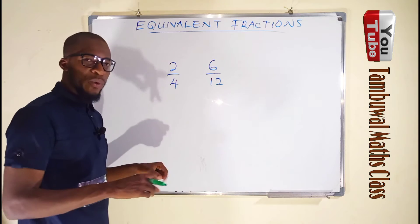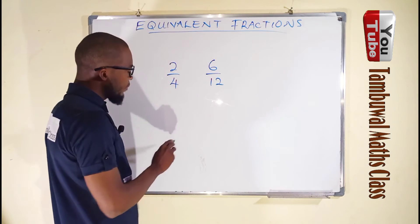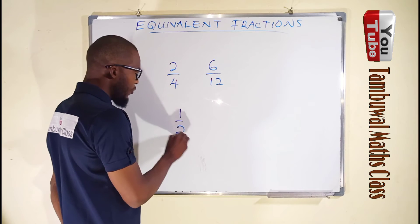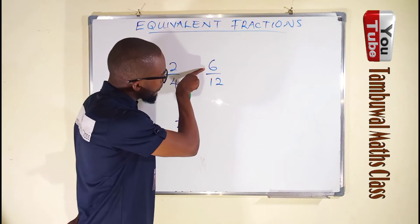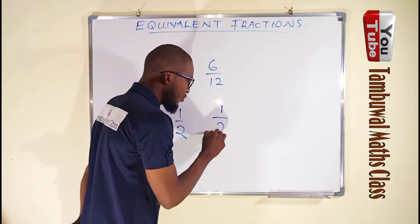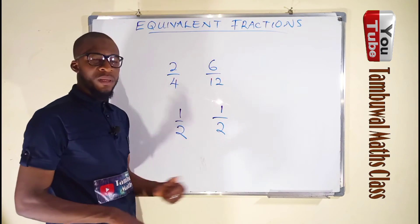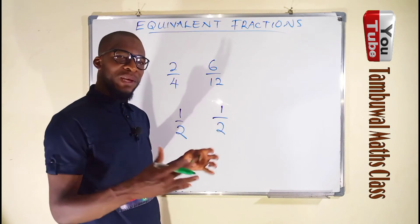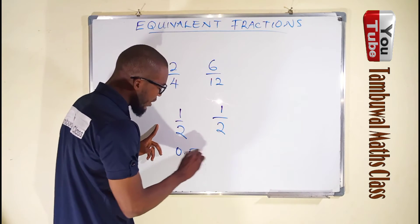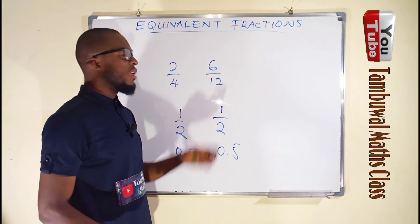Number two: if we reduce these fractions to their lowest term they will be exactly the same. Two can go into two one time; two can go into four two times. Six can go into six one time; six can go into twelve two times. To their lowest term they are exactly the same. And last but not least, if you transform them to decimal numbers they will also be exactly the same — both equal 0.5. Hence we say these two fractions are equivalent.